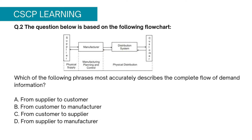Many people believe Option B is correct since the manufacturer is a major entity, but unfortunately that is not true. When demand information is received by the manufacturer, he contacts his suppliers and communicates his demand to them in order to have the raw material to produce the demanded goods. This means demand information always travels from customer to supplier and is not limited to the manufacturer's end only.